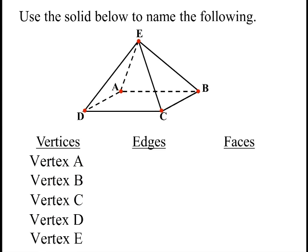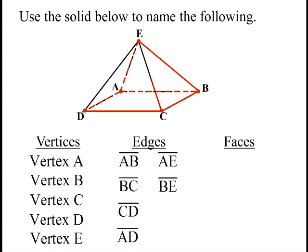The edges are the line segments that connect all these points. So segment AB, that's an edge. BC is an edge, CD, DA. There's four on the bottom, and it looks like there's four lateral edges—those are side edges. So it's got a total of eight edges.